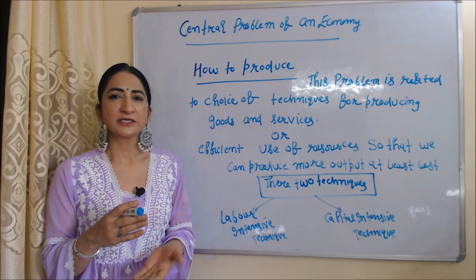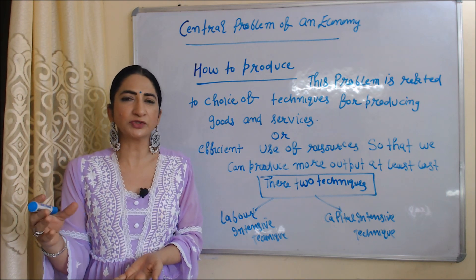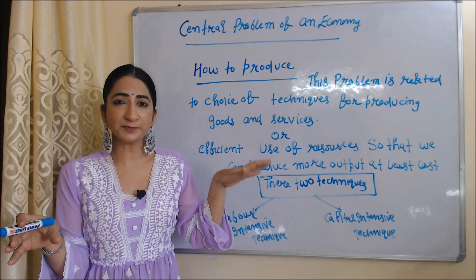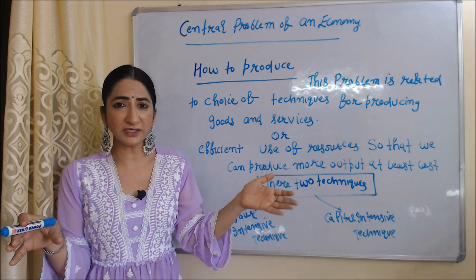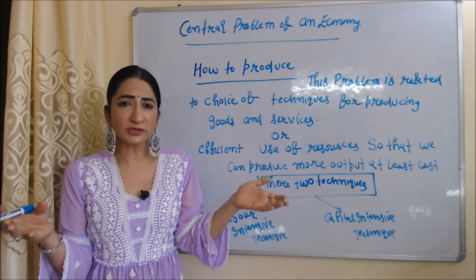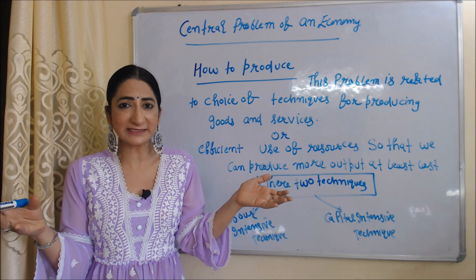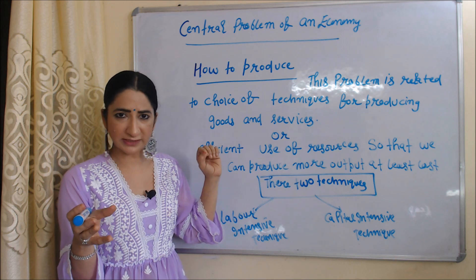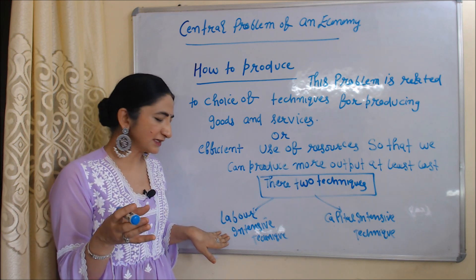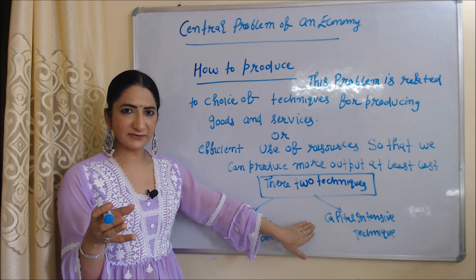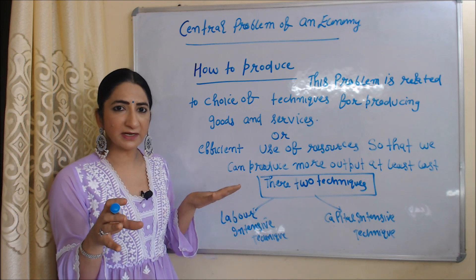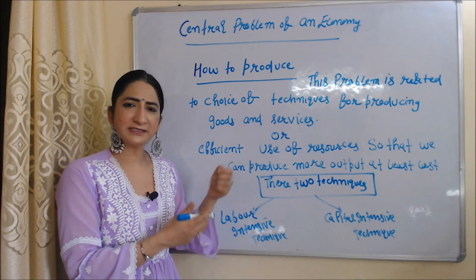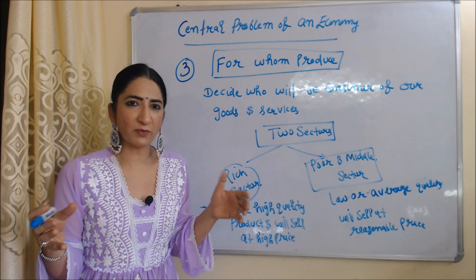The second problem is 'how to produce.' This problem is related to the choice of techniques for producing goods and services, or we can say it is related to the efficient use of resources so that we can produce more output at least cost. There are mainly two techniques: labor intensive technique and capital intensive technique. If we have labor in abundance, we will use labor intensive technique; otherwise, capital intensive technique.